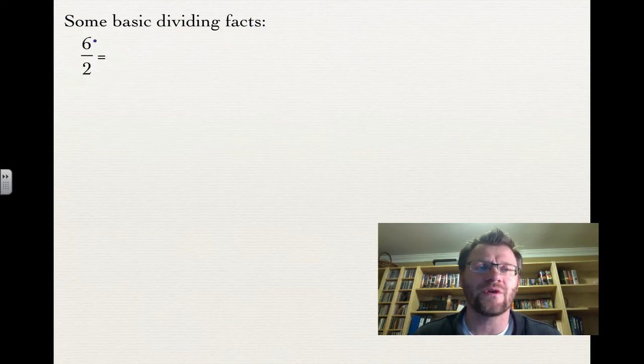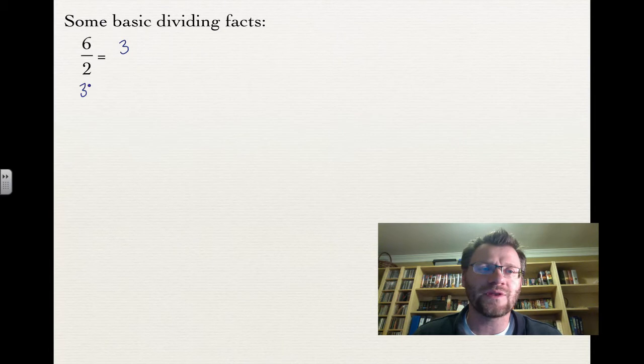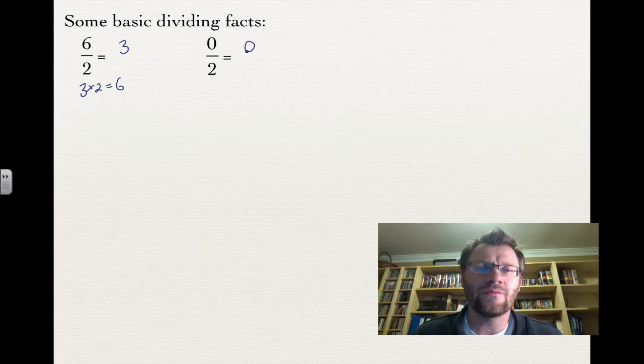We're going to quickly review some basic dividing facts. First, 6 divided by 2, we know that's 3. And we know that's 3 because 3 times 2 equals 6. How about 0 divided by 2? We know that one is 0, because 0 times 2 equals 0.